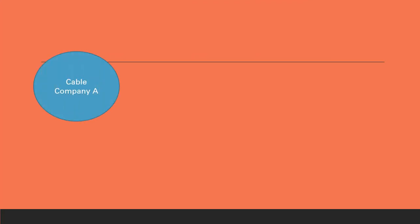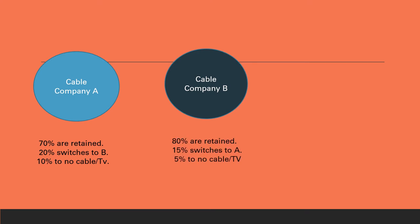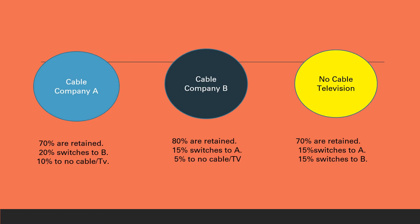So it says in cable A, 70% are retained, 20% switches to B, and 10% switches to no cable TV. In company B, 80% are retained, 15% to A, and 5% to no cable TV. And no cable television, 70% are retained, 15% switches to company A, and 15% switches to company B. Using these, let us prepare a model, a tree diagram, so that we can prepare the transition matrix for the problem.